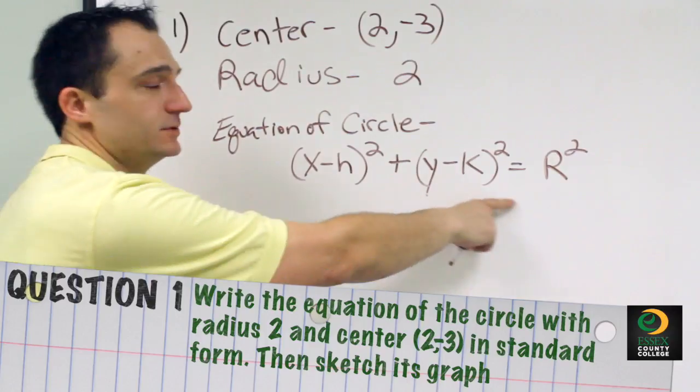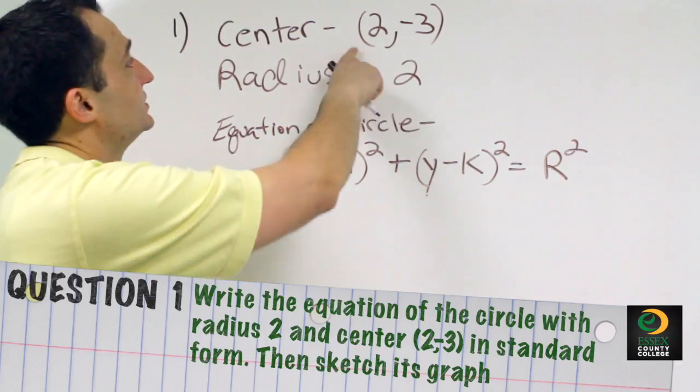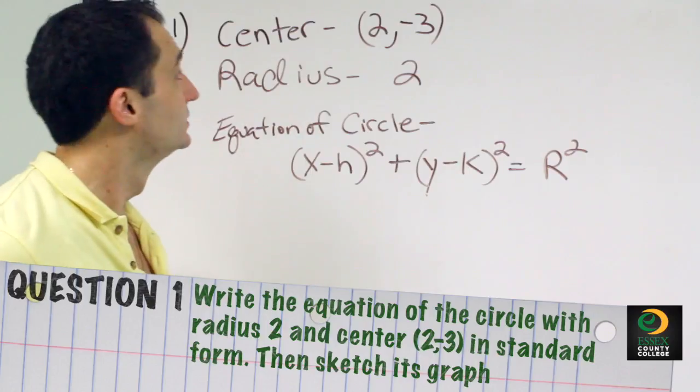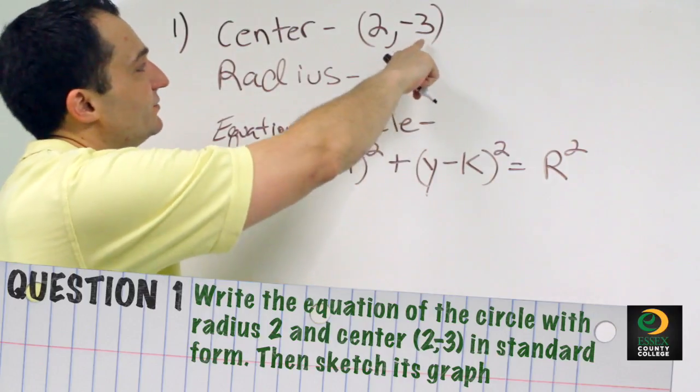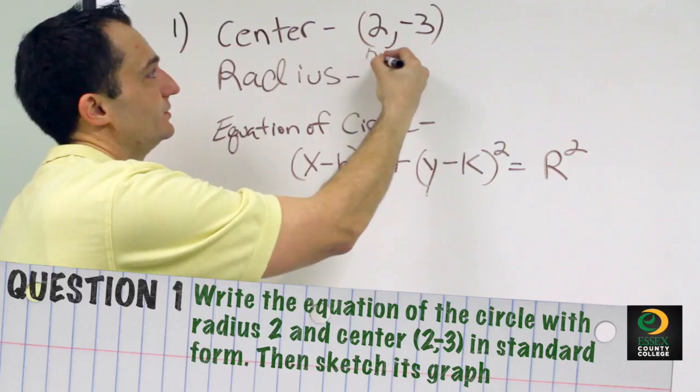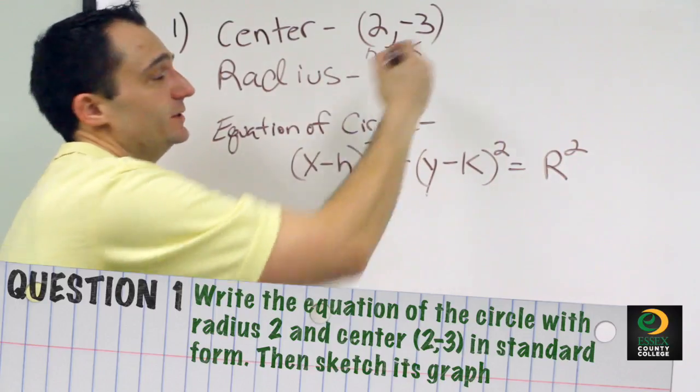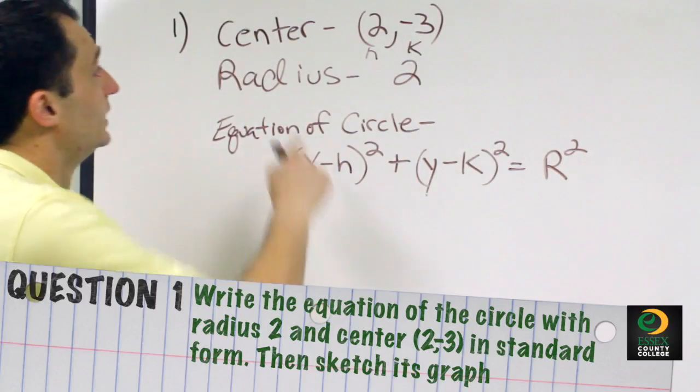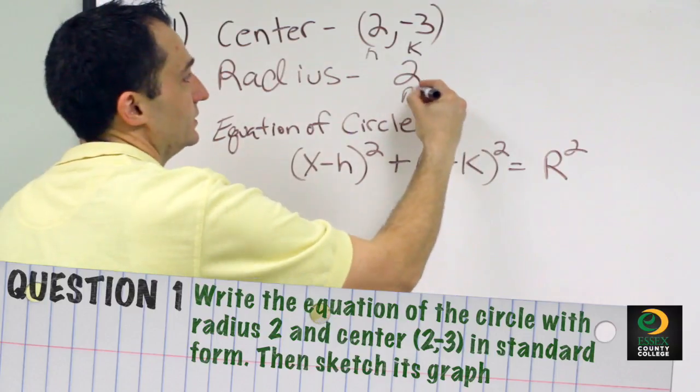This is your equation of a circle and all we're going to do is substitute the center and radius into the equation. This 2 and negative 3 correlates to the h and k, so 2 would be your h and negative 3 would be your k. And the radius would just be your r, which would be 2.